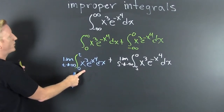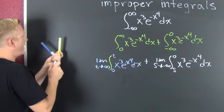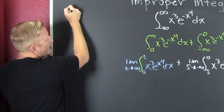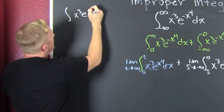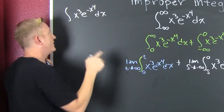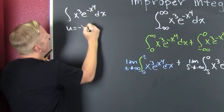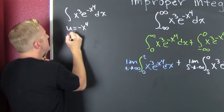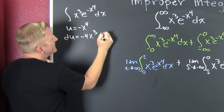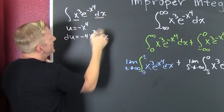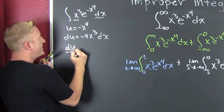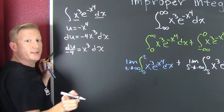So now, since we're here, let's work that integral. Without making substitutions yet, let's call this the integral of x to the third times e to the minus x to the fourth dx. We're going to sub those limits back in later. I'm going to integrate this using u equals minus x to the fourth. Then du is minus four x to the third dx. So du over minus four equals x to the third dx.